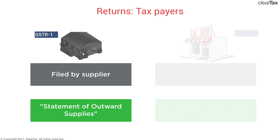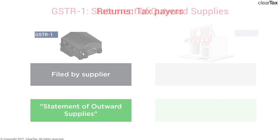Focusing on the statement of outward supply — GSTR 1 — there are five broad categories into which you can divide the details that GSTR 1 requires from the supplier. This categorization is for our understanding; it is not categories that the return specifies on its own.